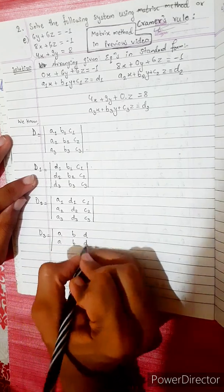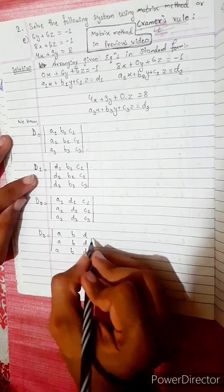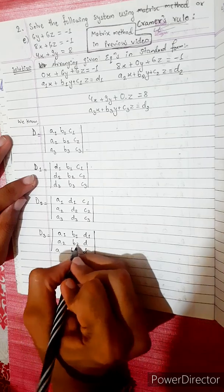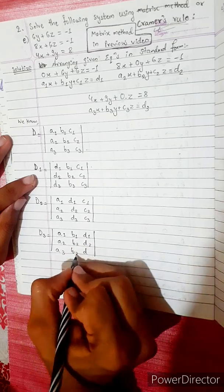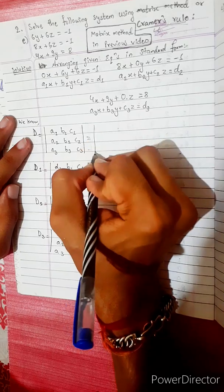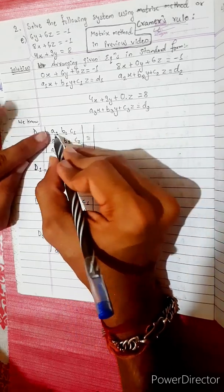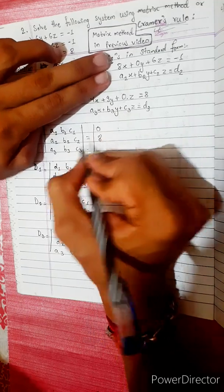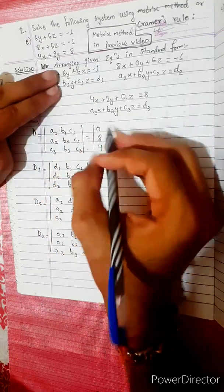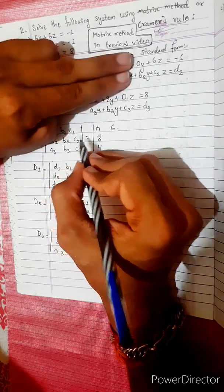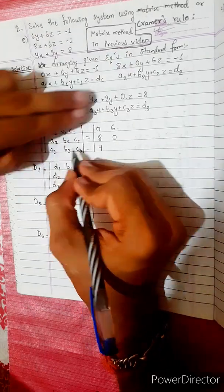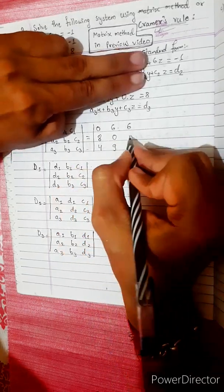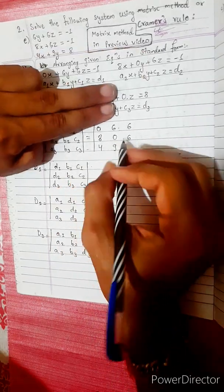The matrix values are: a1 is 0, a2 is 8, a3 is 4. B1 is 6, b2 is 0, b3 is 9. C1 is 6, c2 is 26, c3 is 0.